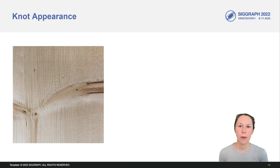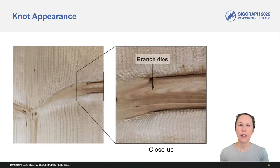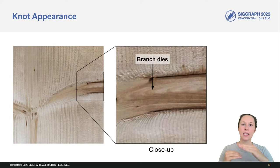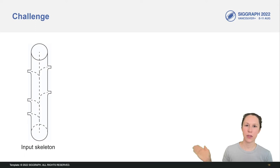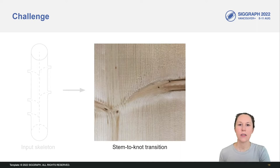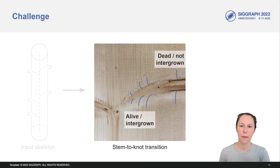Before going into the method, let me specify the problem. What exactly are we trying to model? This is a detailed photo of a knot that is cut along its skeleton. A knot always starts growing from the pith, the central core of the tree, and it grows out in a more or less pronounced curvature while causing distortions to the surrounding stem grain. Here, something interesting happens. The branch dies, and then it stops expanding in thickness and is no longer intergrown with the stem grain. But the knot is still present as an obstacle for the stem grain to grow around. The challenge here is, given some input skeleton, we want to model these stem-to-knot transitions, whether the knot is intergrown or not, depending on when it is alive or dead, and we want to do so with direct evaluation at any point.